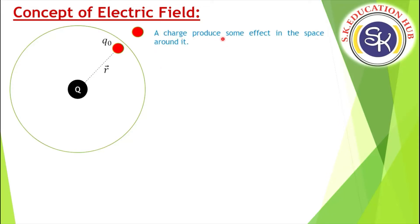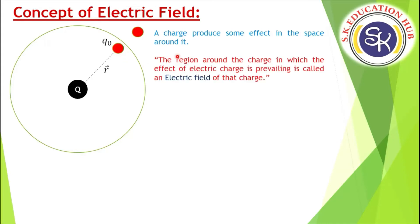So a charge produces some effect in the space around it. The region in which the effect of the electric charge is prevailing is called the electric field of that charge. That region is called the electric field of that charge. So this was the basic definition.